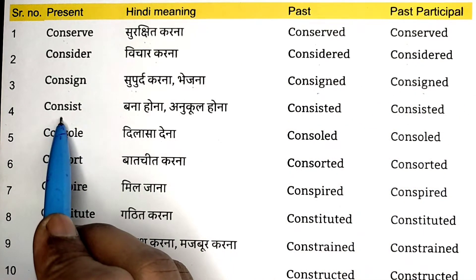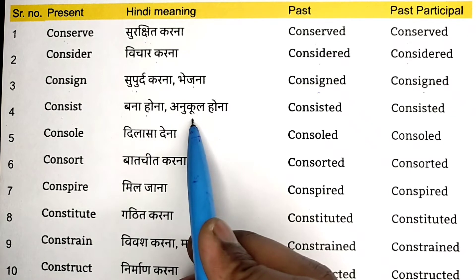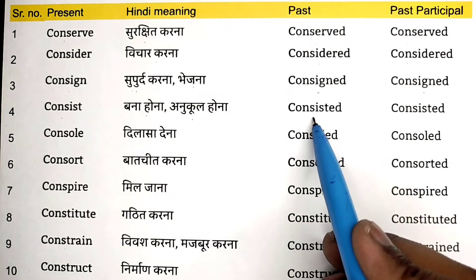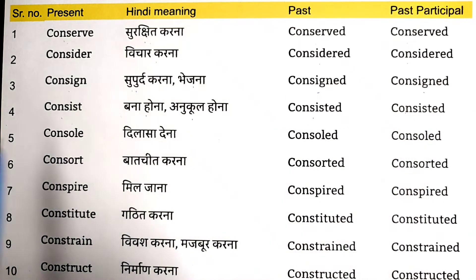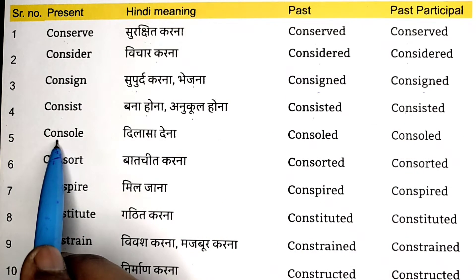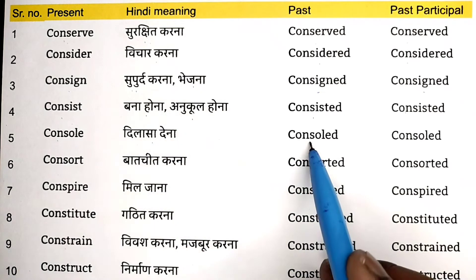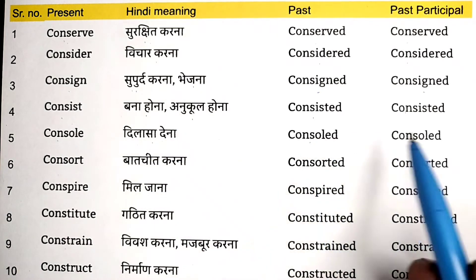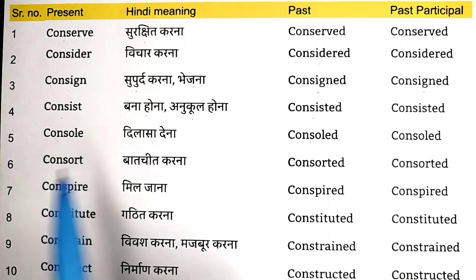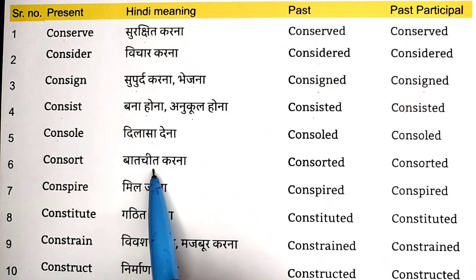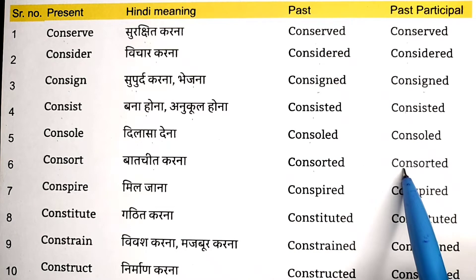Consist means bana hona ya anukool hona. Consisted, consisted. Consol means dilasa dena. Consoled, consoled. Consort means bachit karna. Consorted, consorted.